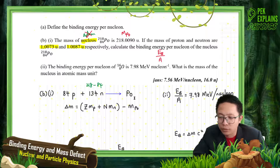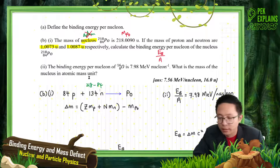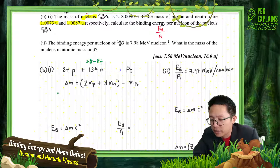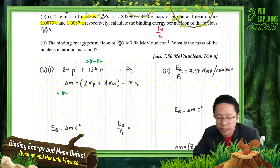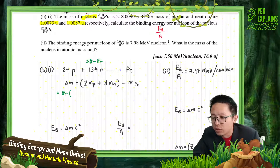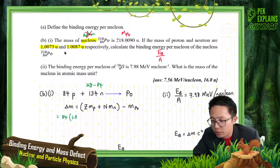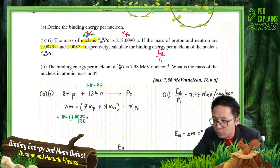To get the Polonium nucleus, first find the mass defect, then find the binding energy. The mass defect calculation starts with the 84 protons — use the mass of proton given in the question, which is 1.0073 u.